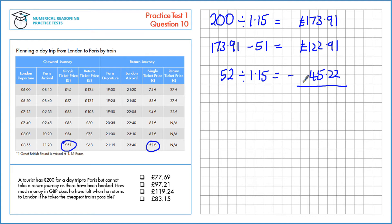Now let's subtract that from the remaining amount of money, which gives us a total of £77.69 remaining.